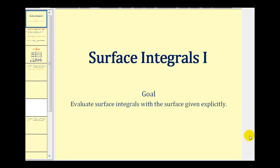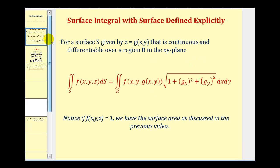Welcome to the first video on surface integrals where the surface is given explicitly. For a surface S given by Z equals G of X, Y, that is continuous and differentiable over the region R in the X, Y plane, we can evaluate this double integral of F of X, Y, Z integrated over the surface S as the double integral over the region R in the X, Y plane. There are some important things we should notice here: first, we're going to replace Z with G of X, Y.